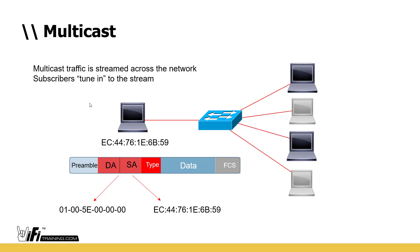Multicast is streamed across the network and allows subscribers to tune in to the stream. It uses a specific block of addresses so other devices can dial in — kind of like conference calling, allowing people to subscribe to that stream. Not everybody has to receive it — only those subscribed get a copy. The data is sent once and people tap into that stream to hear it.